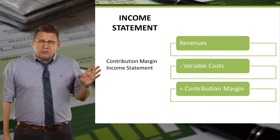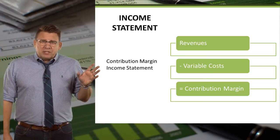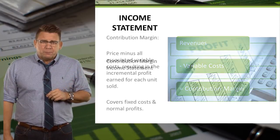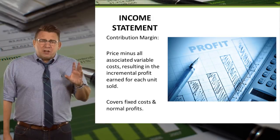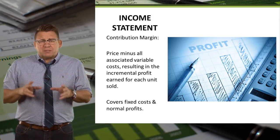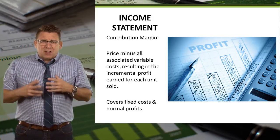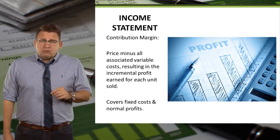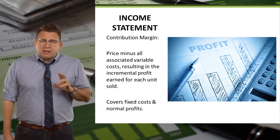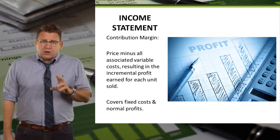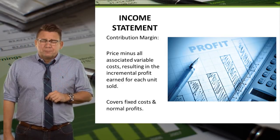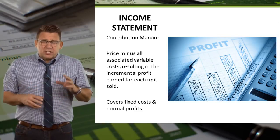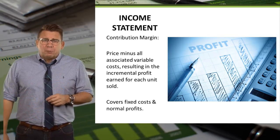Revenues are listed first, and from that we subtract variable expenses, and this equals contribution margin. You might think of contribution margin as the product's price minus all of its variable costs. Thus contribution margin is the incremental profit earned on each unit sold.